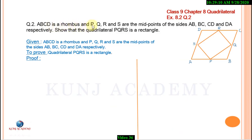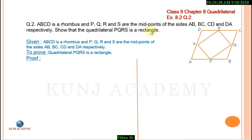ABCD is a rhombus and P, Q, R, S are the midpoints of the sides AB, BC, CD, and DA respectively. We need to prove that the quadrilateral PQRS is a rectangle. Construction: Join AC.